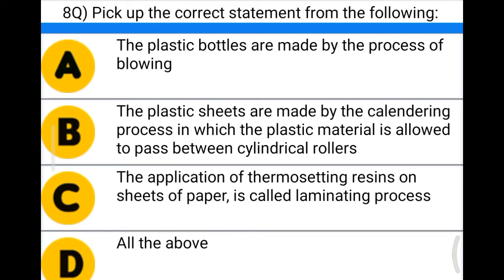Next question: pick up the correct statement — option A: plastic bottles are made by the process of blowing, option B: plastic sheets are made by the calendering process in which plastic material passes between cylindrical rollers, option C: application of thermosetting resins on sheets of paper is called laminating process, option D: all of the above. The correct answer is option D: all of the above.